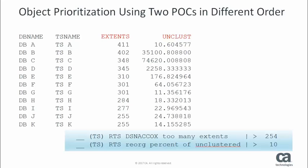This simple example shows how changing the order of the POCs within a profile impacts how objects are prioritized. More complex examples are provided in the product documentation. In this list, we see the results of prioritizing the objects by the two POCs we selected: Extents and Unclust. Objects are ordered first by the Extents values because we selected Extents as the first POC. Tablespace A has the highest Extents value, so this object has the highest priority. The rest of the objects are prioritized in descending order by the number of Extents. If more than one object has the same Extents value, then the Unclust value determines the priority order of those objects.